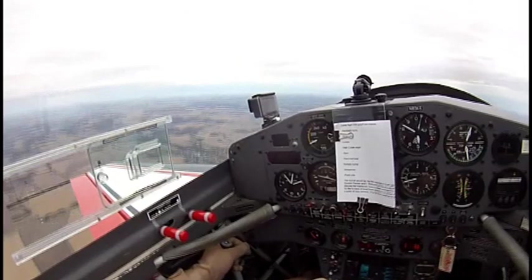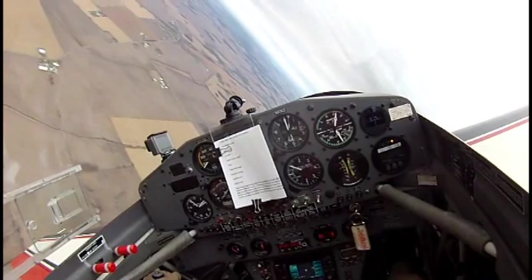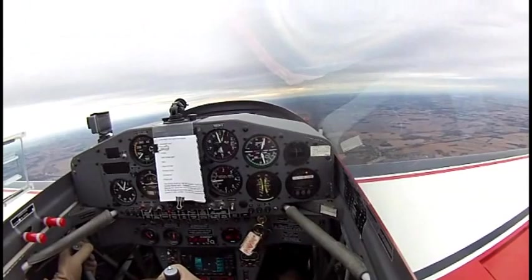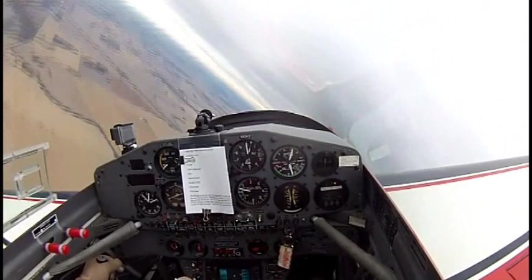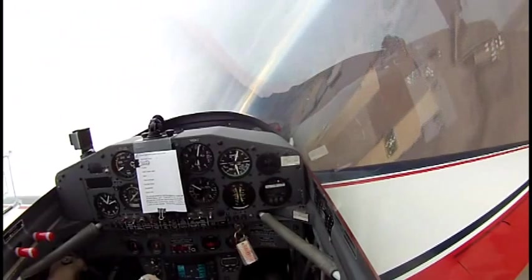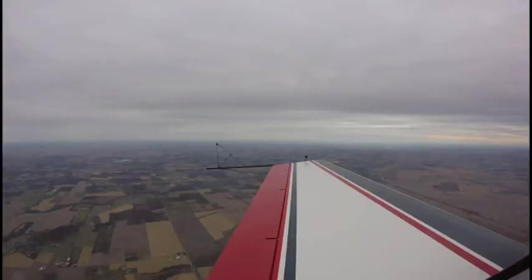This will be around the opposite direction. Again, the nose comes up. You can't see my feet moving, but I'm adding top rudder during the knife edge. Next is going to be the loop. Back to safety turns. Make sure you clear the area before you do each of your maneuvers. Another slow roll. Notice that he maintained altitude all the way around.